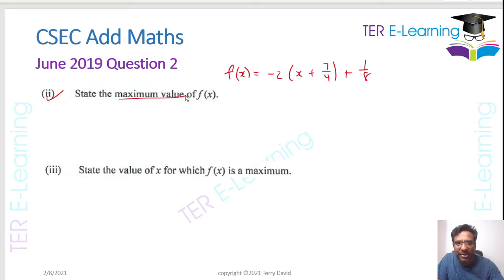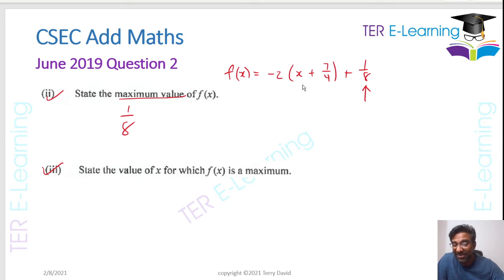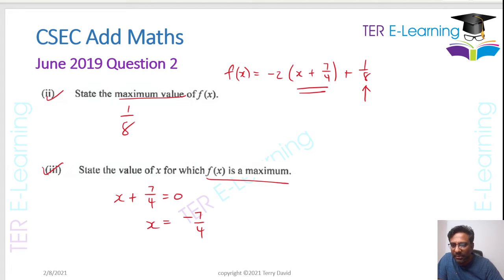The maximum value of the function is simply 1 over 8 — notice it says 'state', so no calculation is required; the answer is just 1 over 8. Then they want to know at what value of x does this occur. All we need to do is put x plus 7 over 4 equal to 0, and therefore x equals minus 7 over 4. That's the value of x for which f(x) is a maximum.